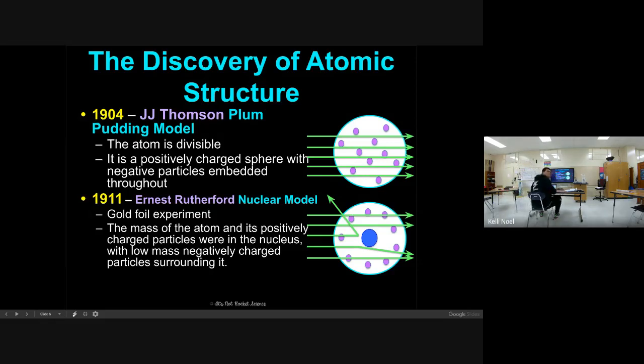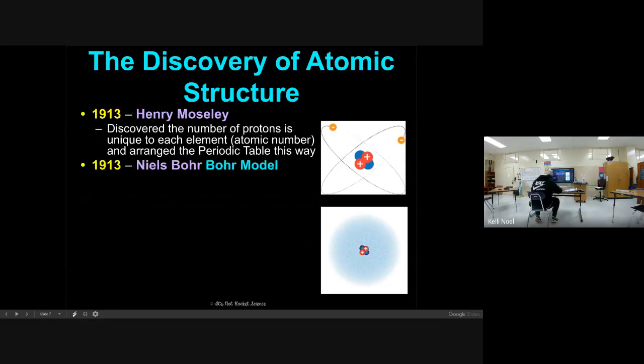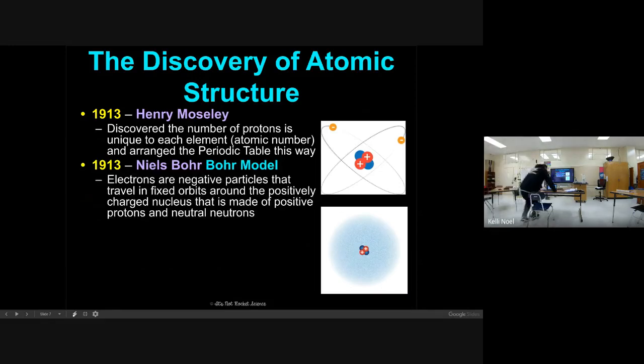Then in 1913 came Henry Moseley. He actually discovered that protons determine each element. Protons are unique for each element. They are the atomic number. He decided to arrange the periodic table by atomic number. So that's how we do it today. The numbers in the top of each box is the atomic number. If you notice, those numbers are in order on the periodic table. When our periodic table is arranged this way, there are certain properties, certain patterns that follow.